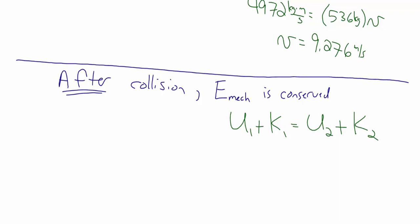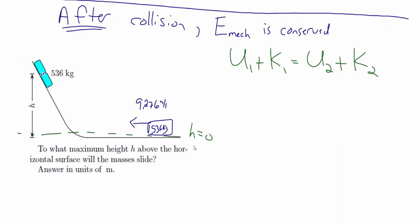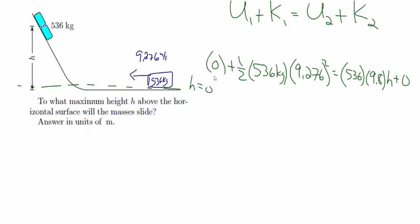Conservation of mechanical energy says that potential energy plus kinetic energy at one point equals potential energy plus kinetic energy at another point. We set height equal to zero at the horizontal surface. After the collision, the objects are moving at 9.276 meters per second. The initial potential energy is zero, and the initial kinetic energy is one-half times the total mass of 536 kilograms times 9.276 squared.